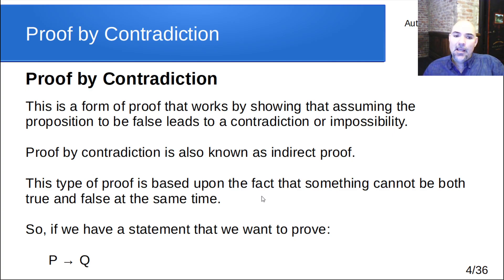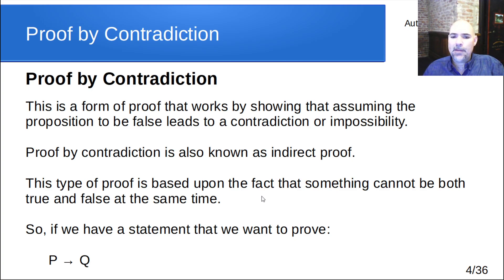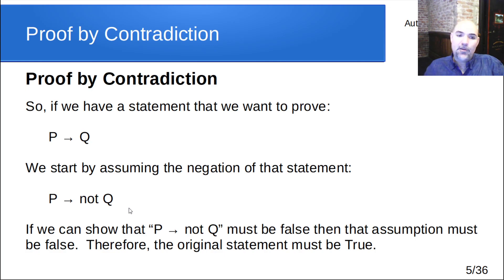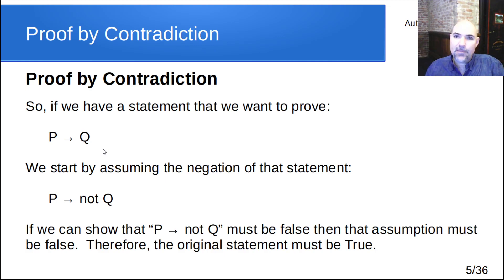So therefore the claim itself has to be true. That whole idea is based on the fact that something cannot be both true and false at the same time. So if the negation of a claim is false, we know the claim has to be true. The converse works as well. If we have some statement we want to prove, like P implies Q, we start by assuming the negation — P implies not Q. If we can show that P implies not Q has to be false, then that assumption — the negation — is false, and therefore the original statement has to be true.